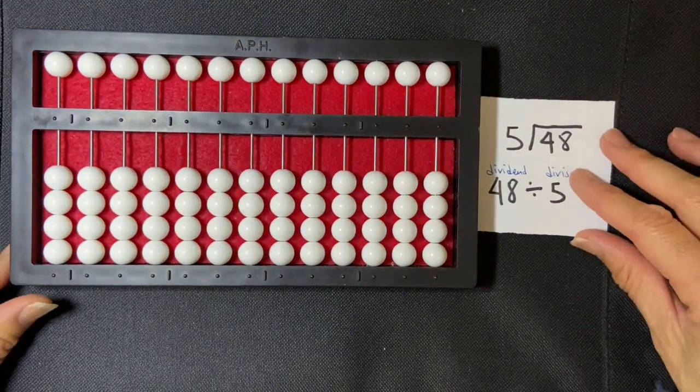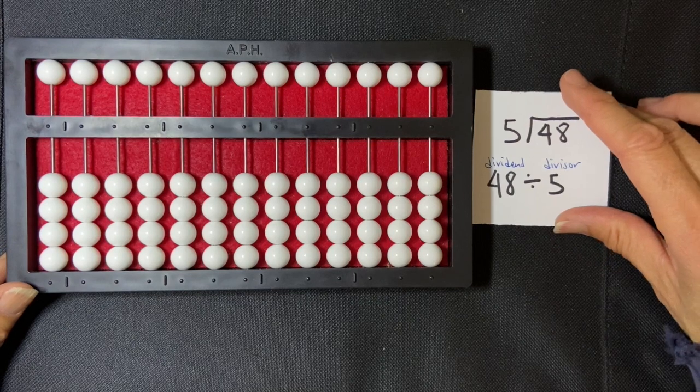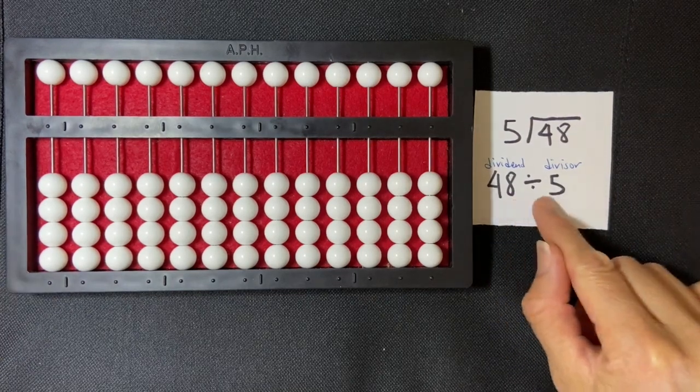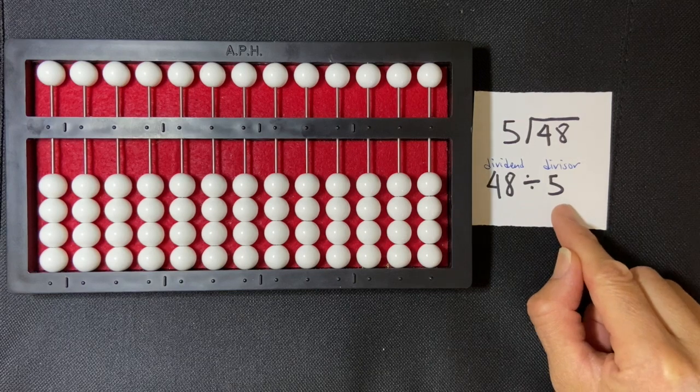I'm going to be doing the counting method using the abacus to divide 48 divided by 5. So 48 is my dividend and 5 is my divisor.